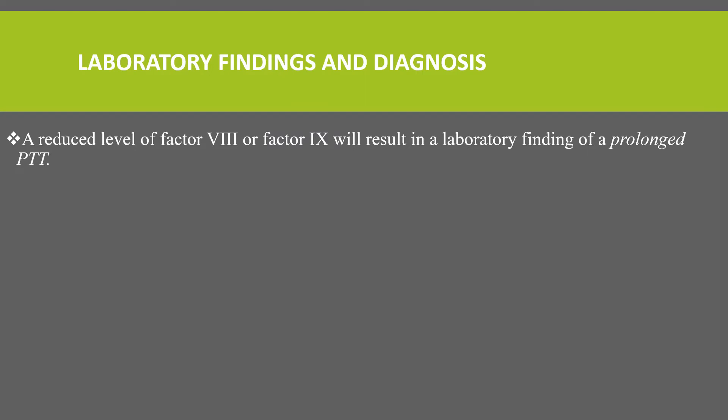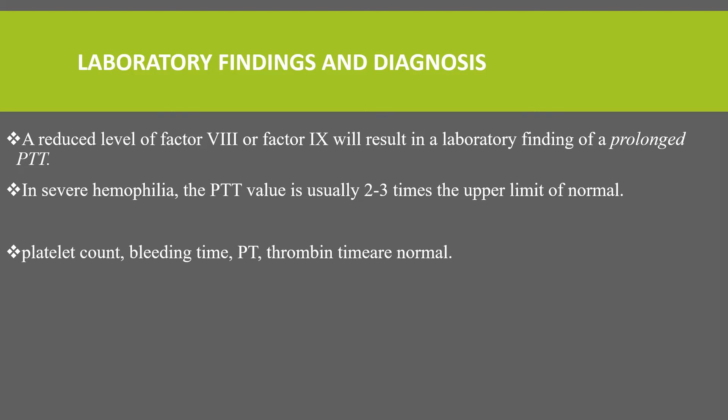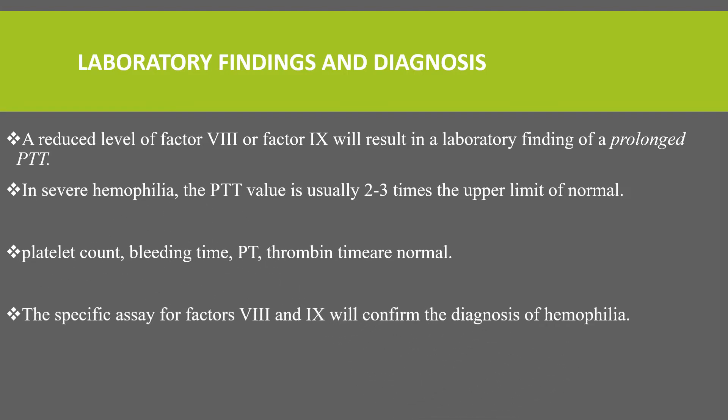Regarding laboratory findings, a reduced level of factor 8 or factor 9 will result in a prolonged PTT, while PT is normal, since PT measures activation of factor 10 by factor 7. In severe hemophilia, the PTT value is usually two to three times the upper limit of normal. Platelet count, bleeding time, PT, and thrombin time are all normal. Specific assays for factor 8 and factor 9 will confirm the diagnosis of hemophilia.